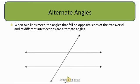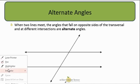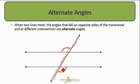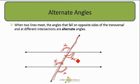When two lines meet, the angles that fall on opposite sides of the transversal — this line right here — if there's a pair of angles and they are on opposite sides of the transversal, they are considered alternate angles. These two angles are alternate, and these two angles are alternate — they are on alternate, or opposite, sides of the transversal.